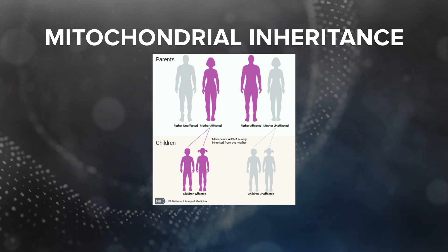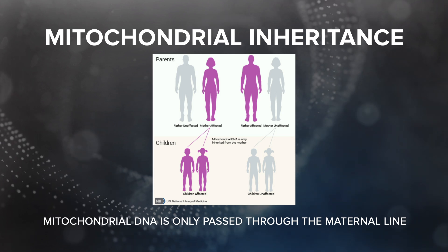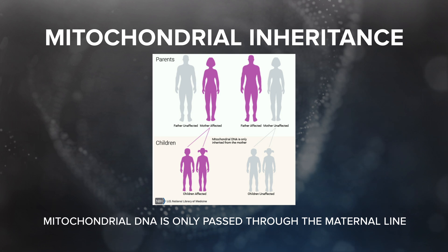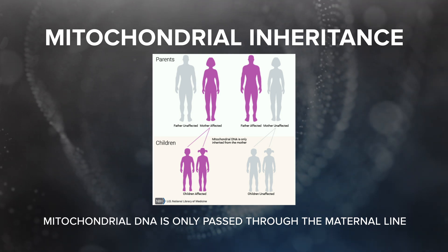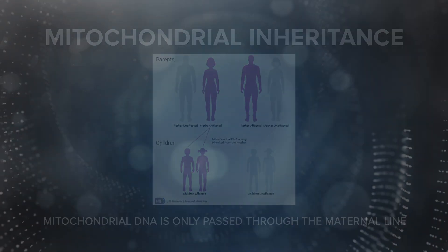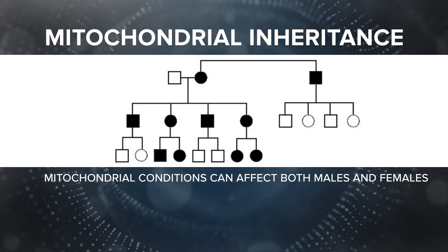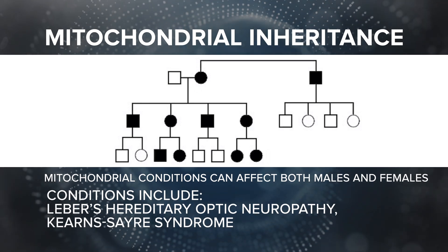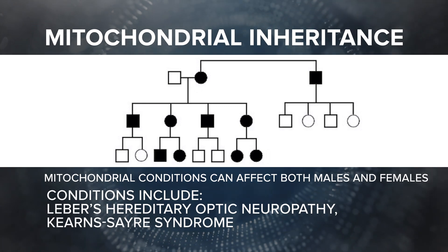Another type of inheritance pattern that you might encounter on the job is mitochondrial inheritance. Mitochondrial DNA is only passed through the maternal line. A newly formed embryo receives all of its mitochondria from the mother through the egg cell, so mothers pass their mitochondrial DNA to all of her children. Men never pass any mitochondrial information to any of their children. Note that mitochondrial conditions can affect both males and females, but can only be passed on by females.